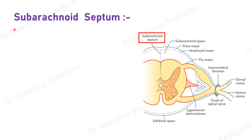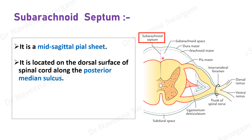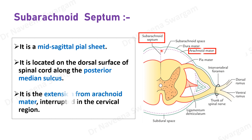The subarachnoid septum is a mid-sagittal pia sheath located on the dorsal surface of the spinal cord along the posterior median sulcus. It is basically an extension from the arachnoid mater, which is interrupted in the cervical region.